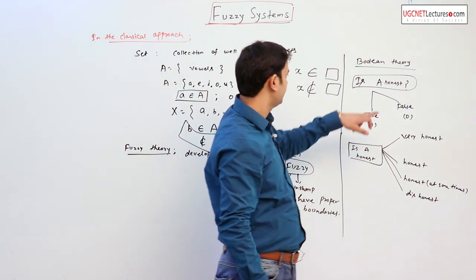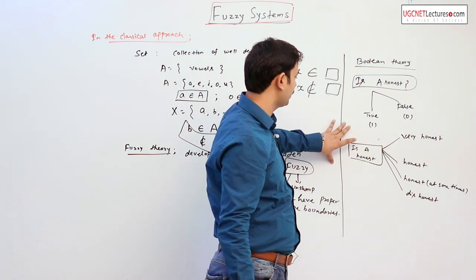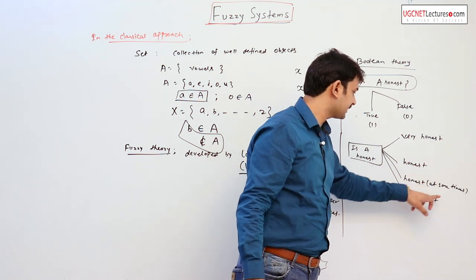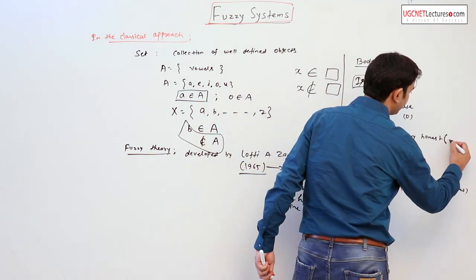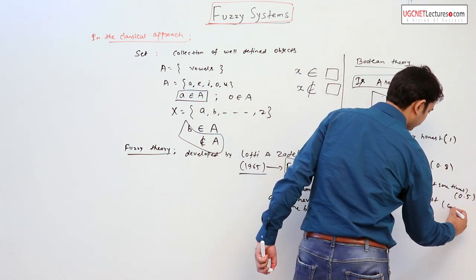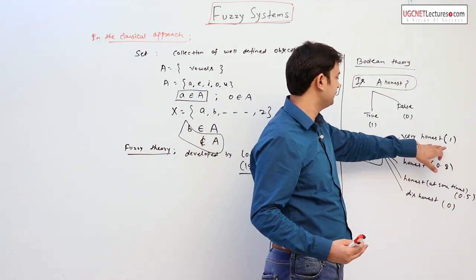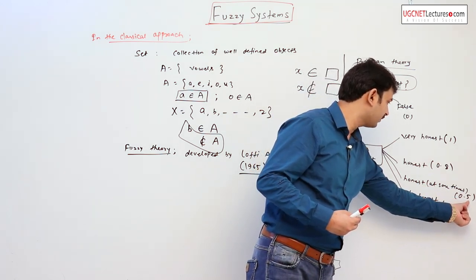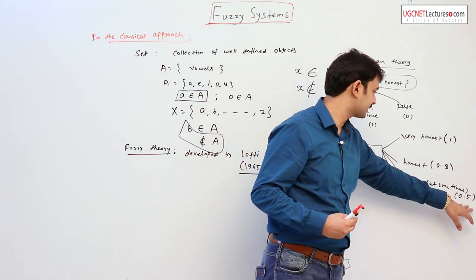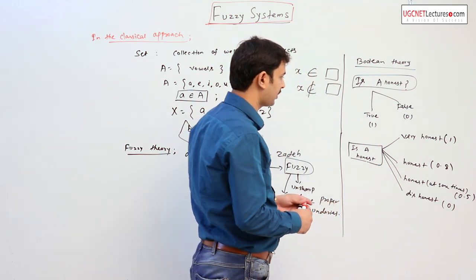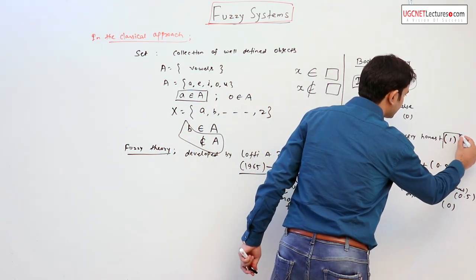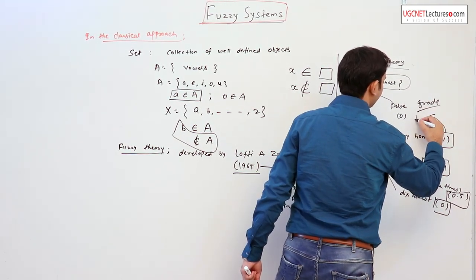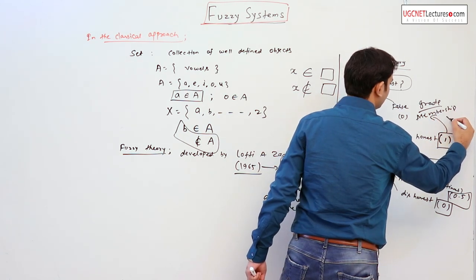In classical theory, the question is either true or false, but in fuzzy theory, it can be distinguished in four ways. Either this person A is very honest, honest, honest at some time, or dishonest, by giving a credit value. For example, very honest means say 80 percent honest — a degree of 0.8. If 0.5, that means honest 50 percent of the time. Zero means that person is not honest. This value on the right-hand side is known as the grade or membership value.